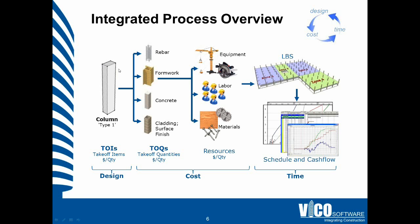For all of those takeoff items — groups of similar elements — we calculate the quantities inside VicoOffice by analyzing the geometry. We run calculation rules during the activation of the model. Those quantities, TOQs or takeoff quantities, can then be used to calculate the cost, the amounts of work — one level deeper — the quantities of amounts of labor, quantities of materials, and required equipment.